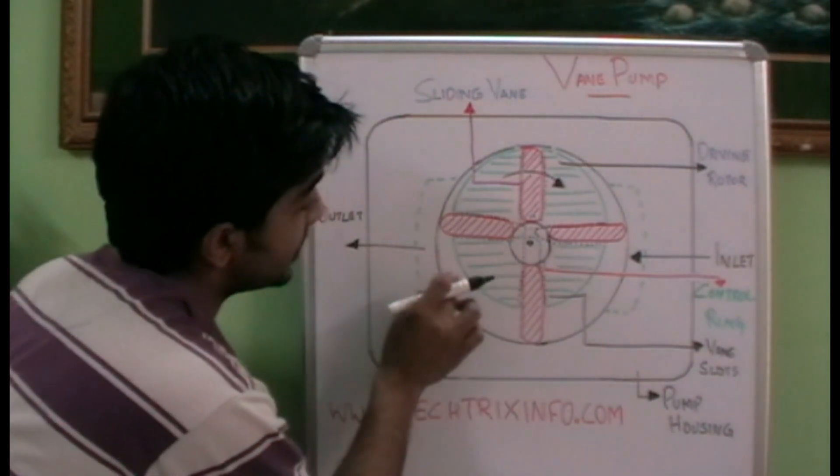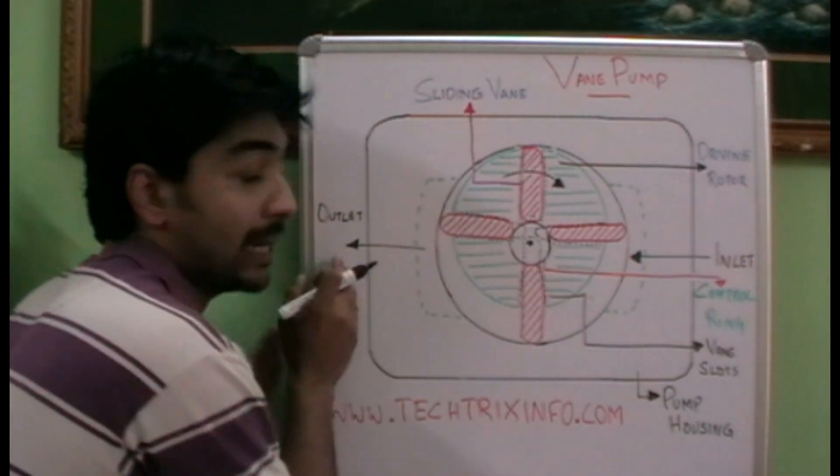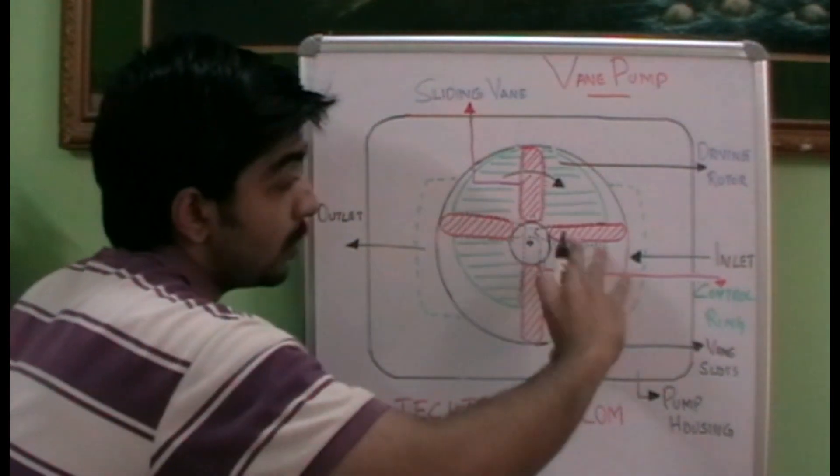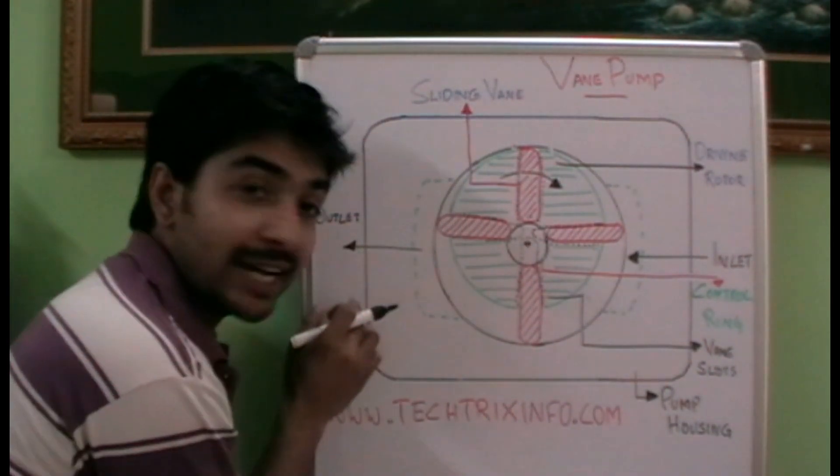And it is pressurized, and when it reaches this portion gradually the area is reducing over here and the outlet port is open. So gradually the oil or the fluid which is trapped here will be pressurized and will be pushed outside to the outlet.